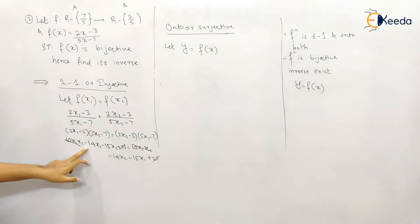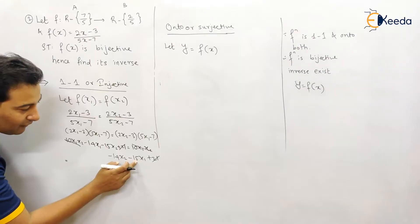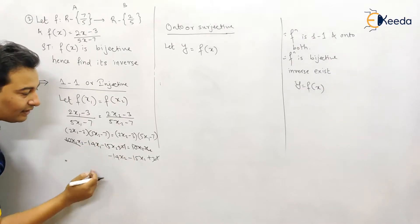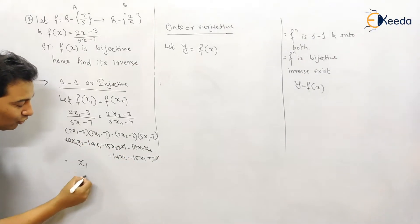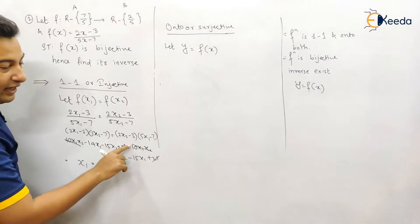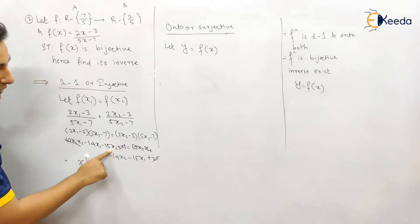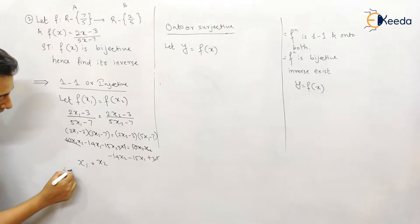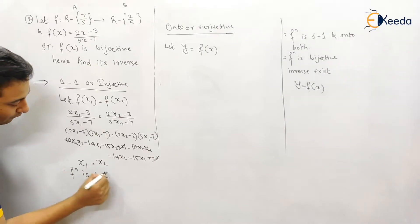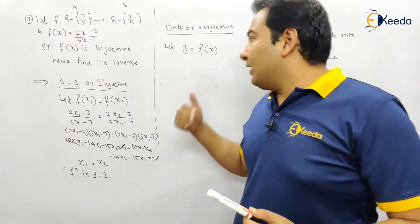The 10x1x2 and 21 terms cancel from both sides. We are left with minus 14x1 minus 15x2 = minus 14x2 minus 15x1. Taking the x1 terms to the left and x2 terms to the right: 15x1 minus 14x1 = 15x2 minus 14x2, giving x1 = x2. Therefore the function is one-to-one.